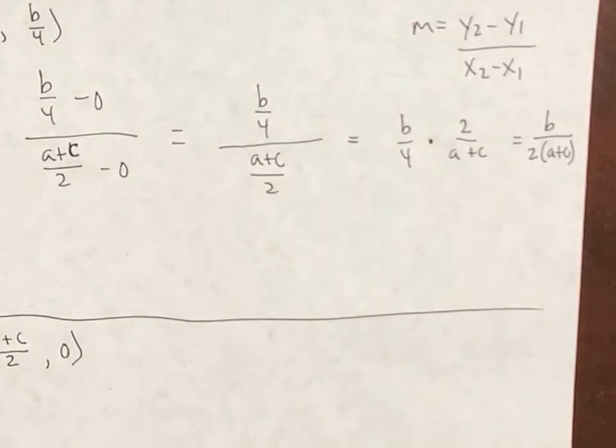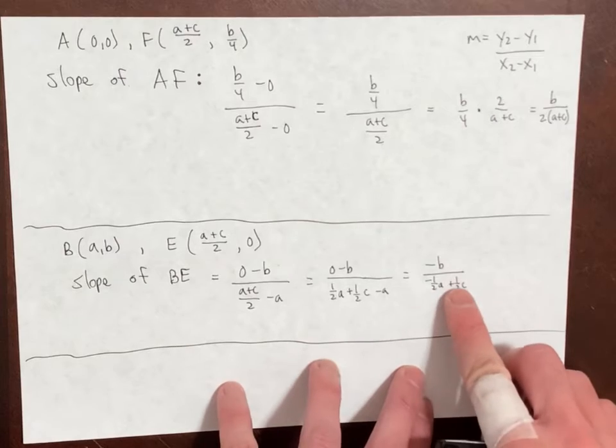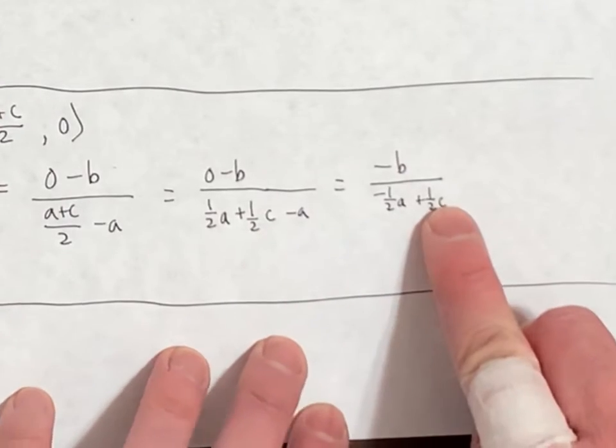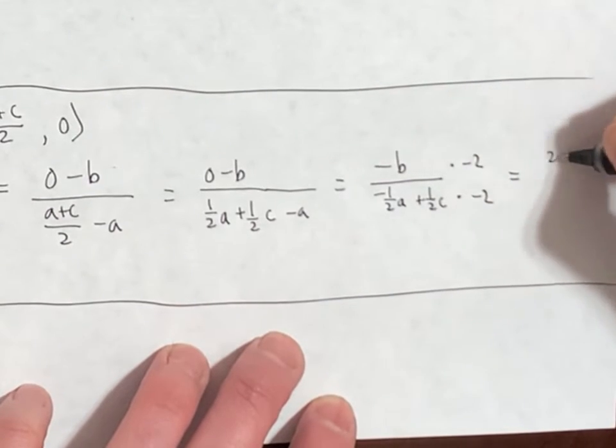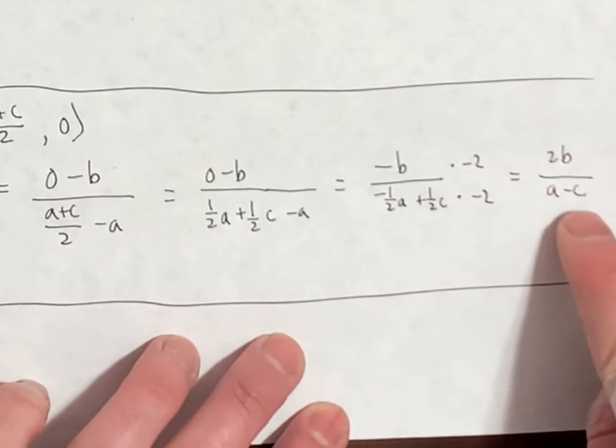Now let's do the same thing for the slope of BE. So I have this here, so far, of A plus 1 half of C. Why don't I multiply top and bottom by negative 2? That'll be 2B over this. Now we've reached the final part.